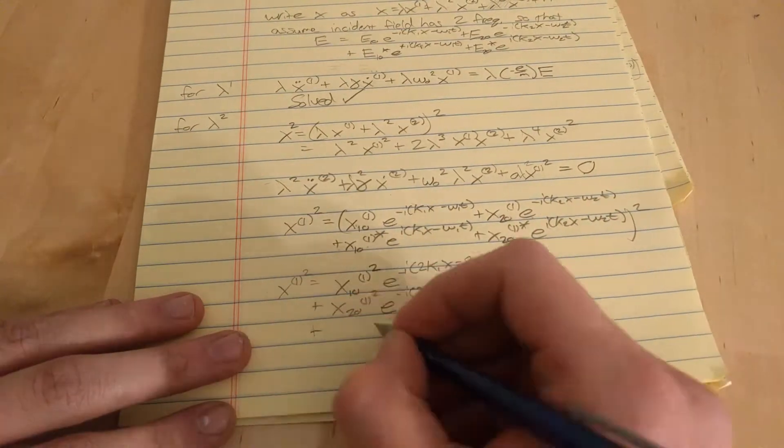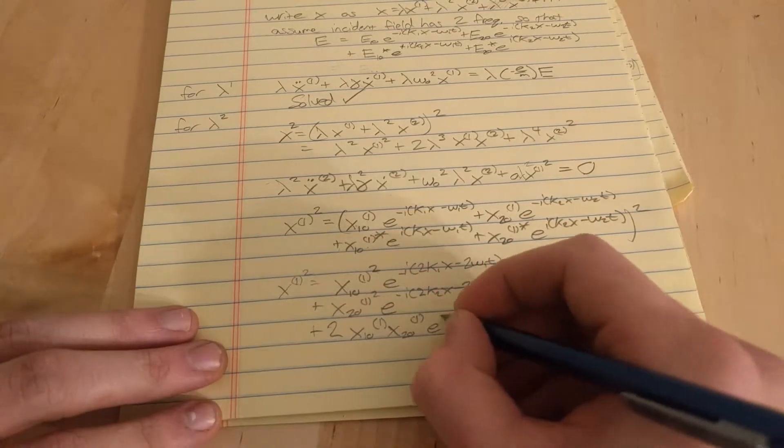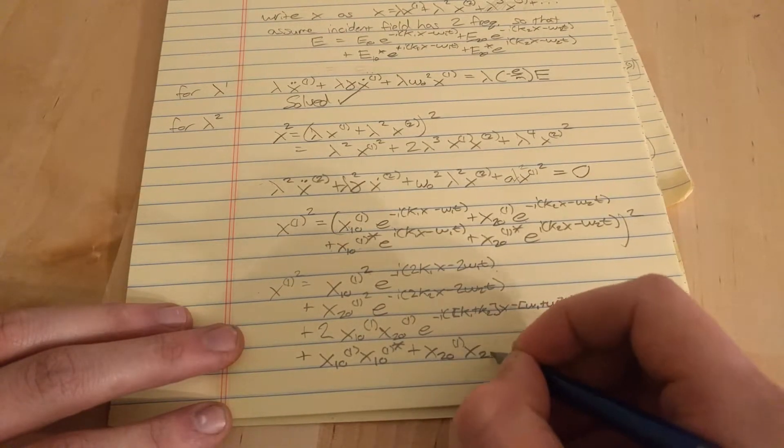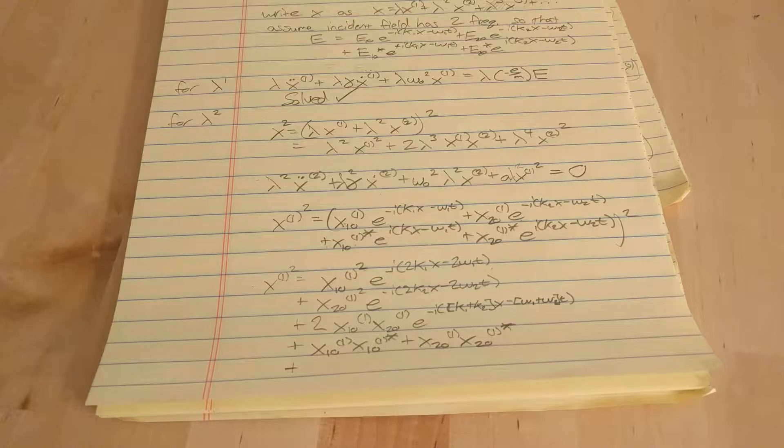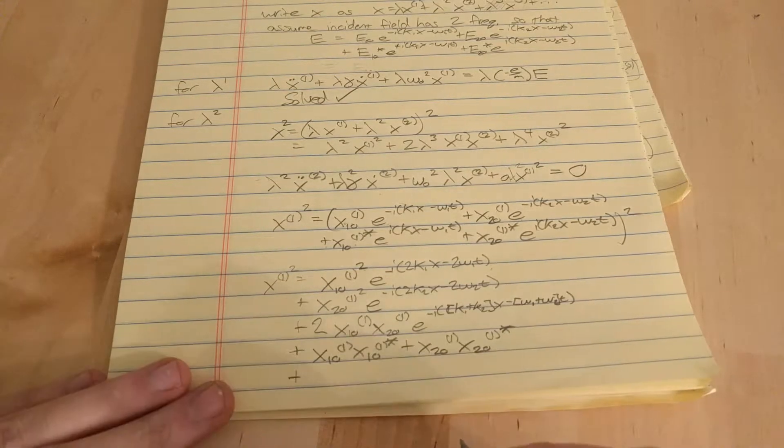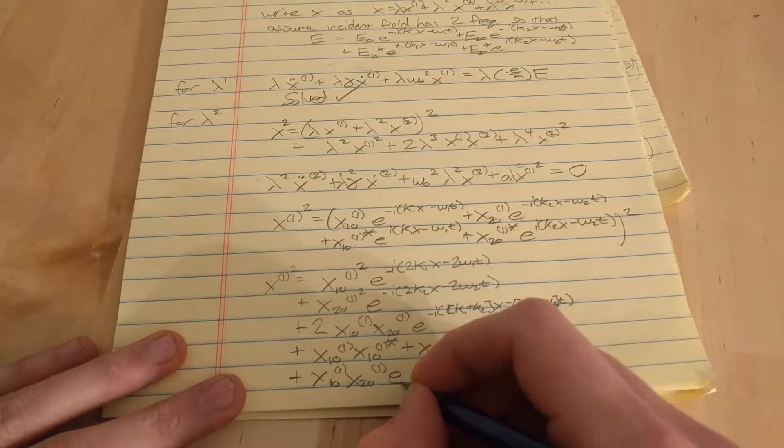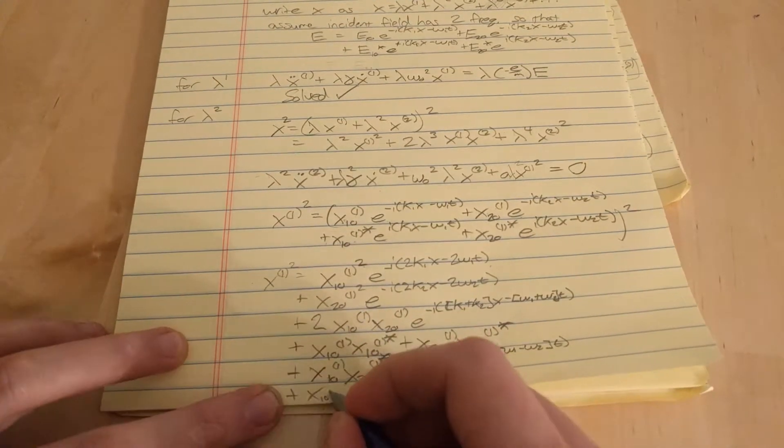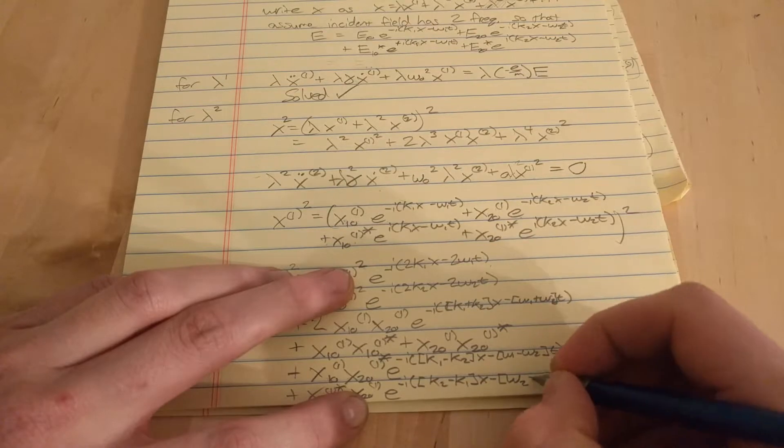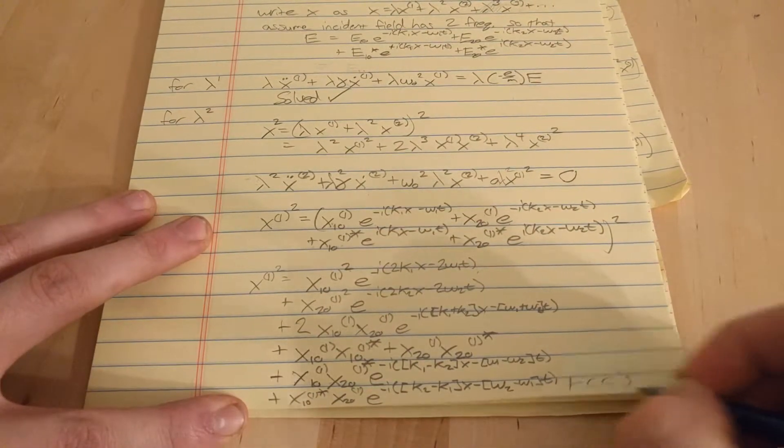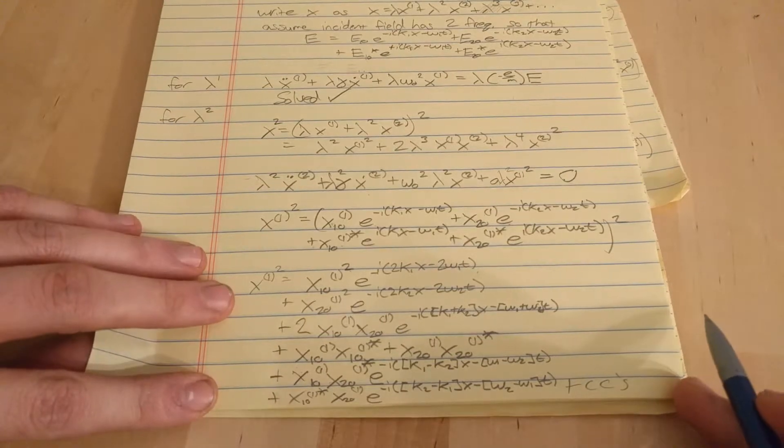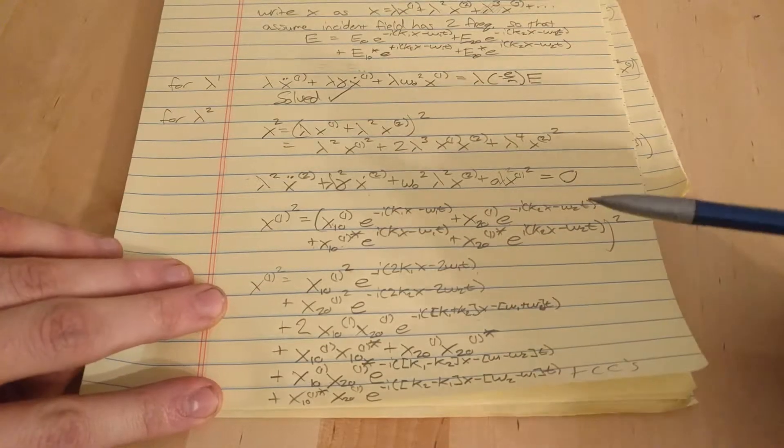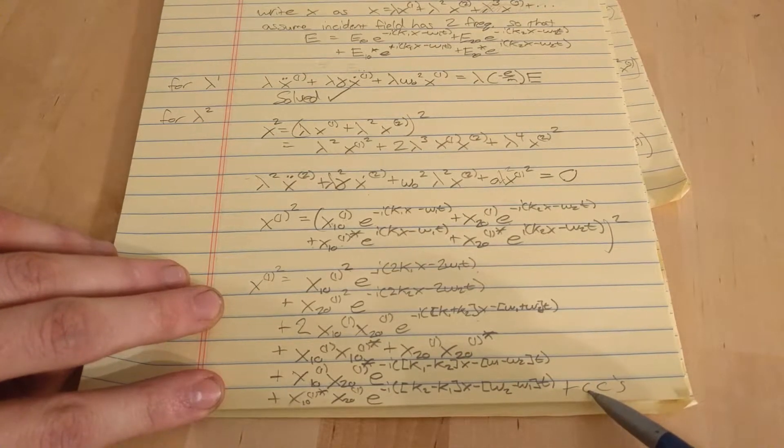So here's the eight terms we're going to get. This term I'm counting as two, plus there's eight complex conjugate, and it gives us 16 terms.